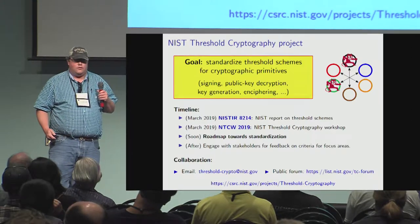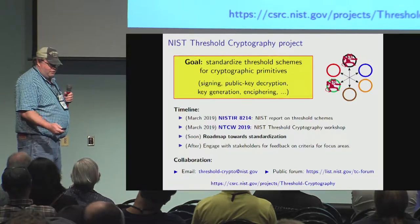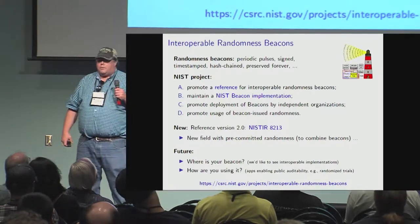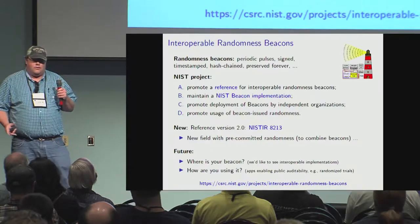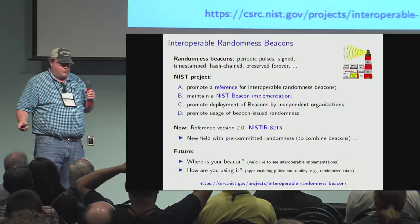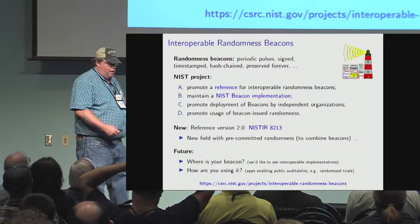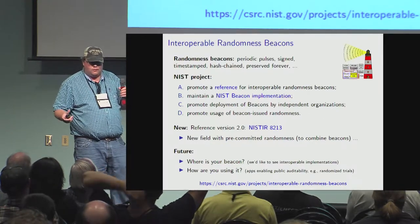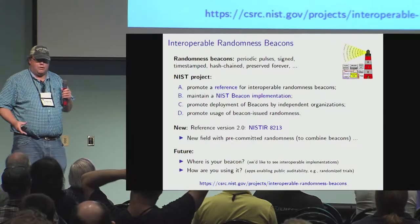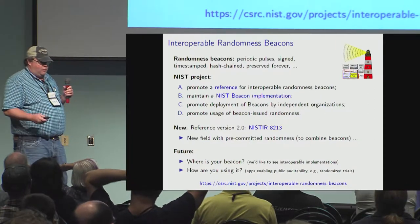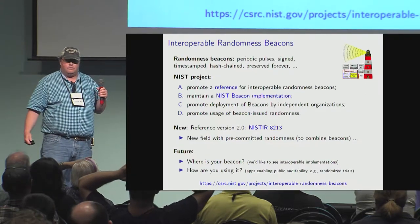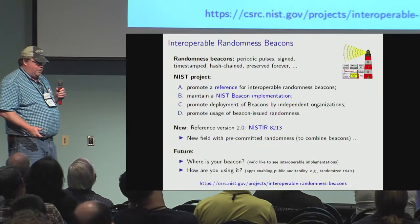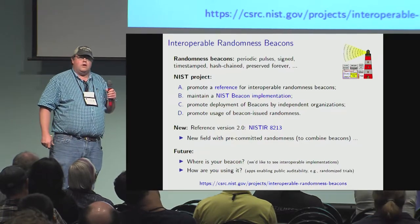If some of you saw Luis's talk on Sunday, you know more about this than everyone else. The last big thing is randomness beacons. The SP 800-90 series is about generating secret random numbers for keys; this is about public randomness. The idea is you have a source that every minute produces a random number with a digital signature and a timestamp — there are hash chains, so even the beacon operator can't change the past. These are useful for public coordination things like audits.